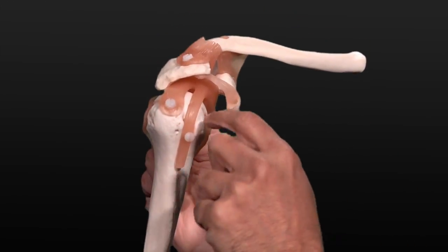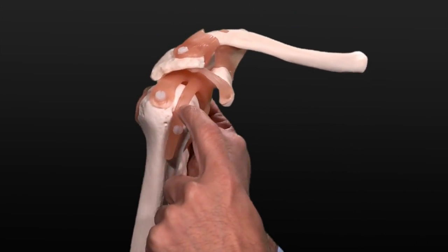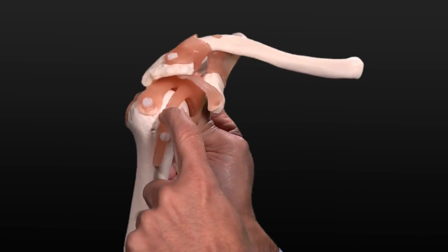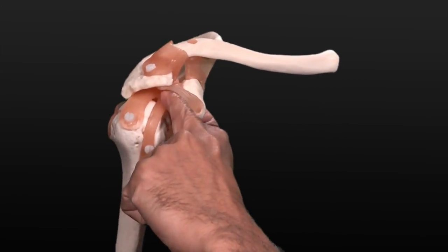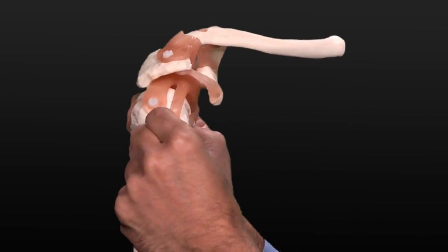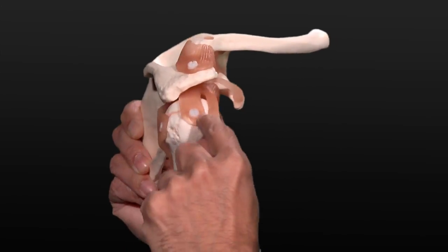We put our working instruments, and if this tendon is torn—a lot of times this tendon here is intact, but it can be torn and be sitting back here—we can pull it back over and attach it back down to the bone right through here.